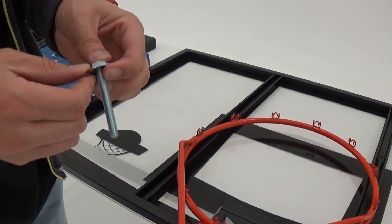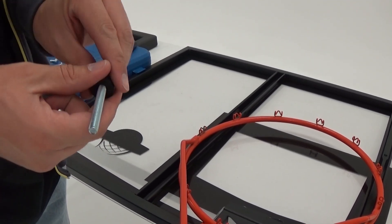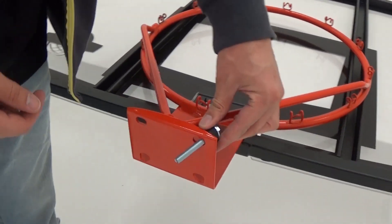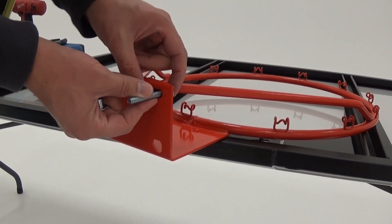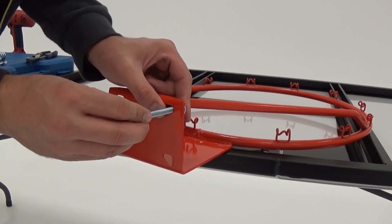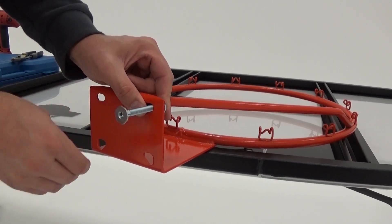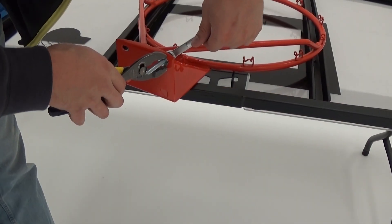Secure two tap bolts, washers, and rubber washers through the bottom holes in the back of the rim as shown. Make sure the bolts are positioned on the outside edge of the holes. Be careful not to over tighten. The rubber washers must not bulge in the center.